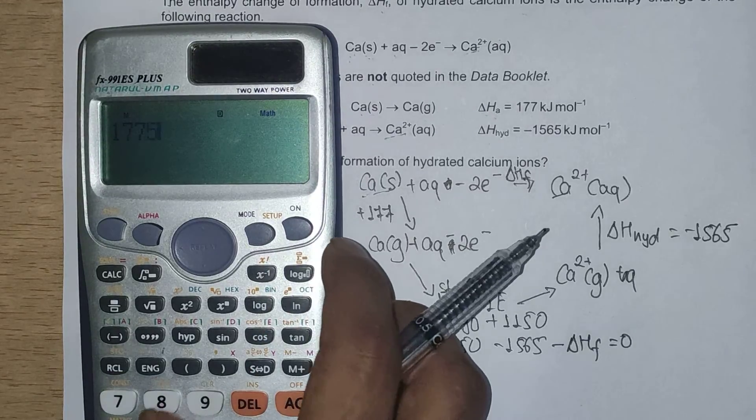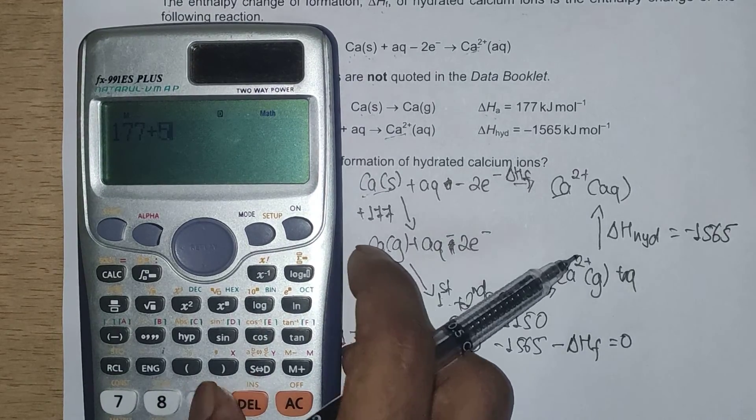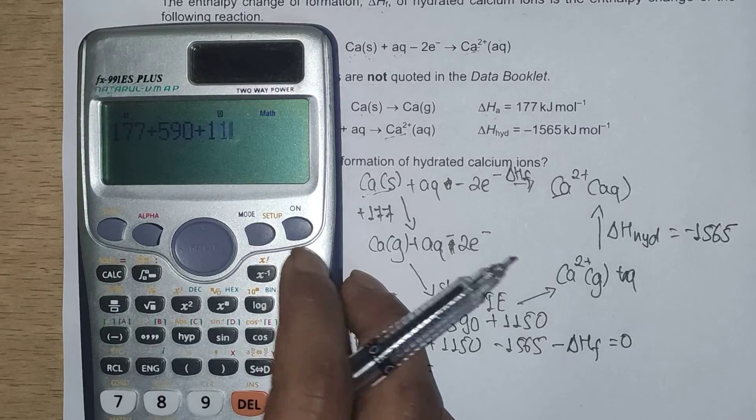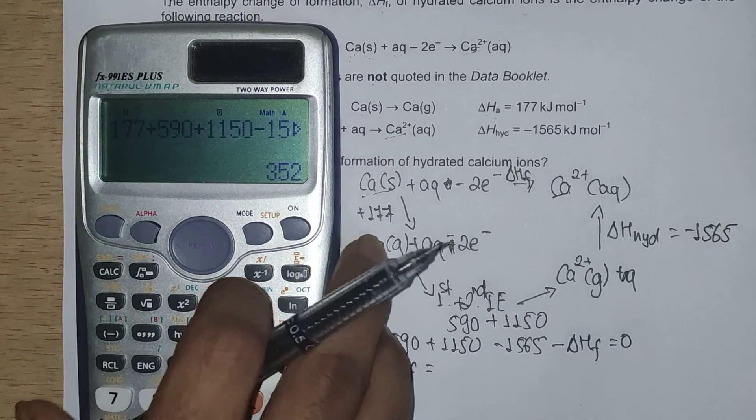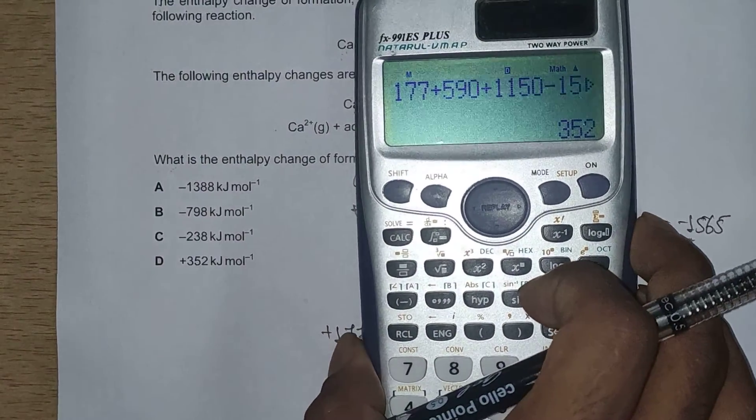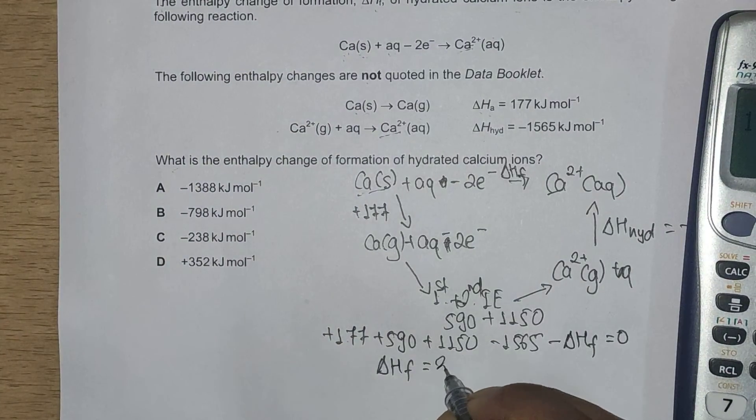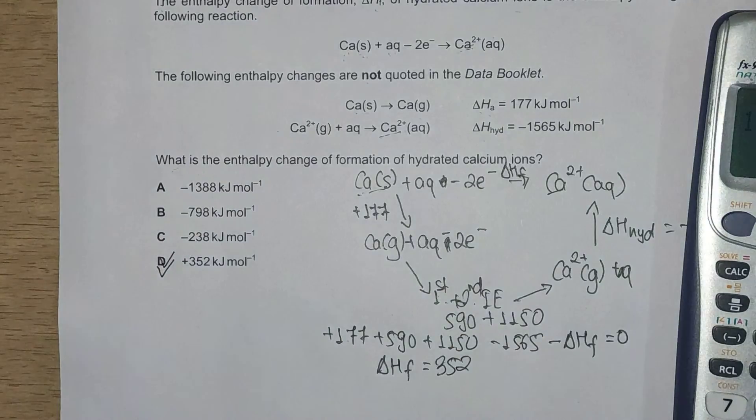177 plus 590 plus 1150 minus 1565. This gives us plus 352 kilojoules per mole, making D the correct answer.